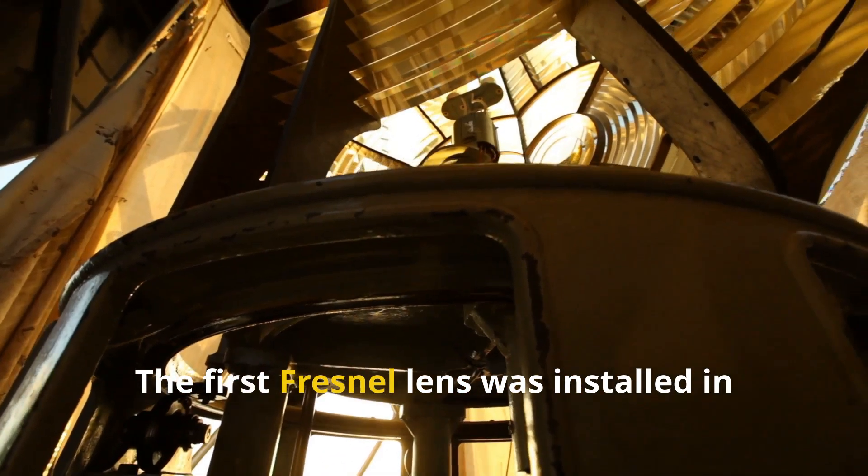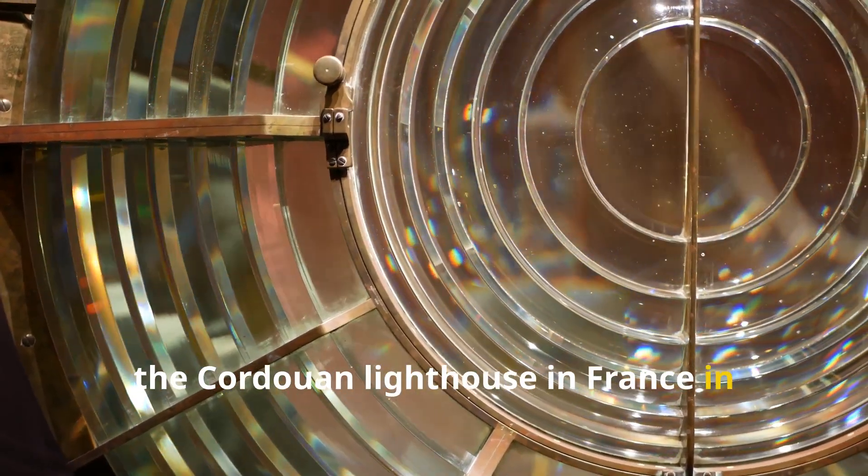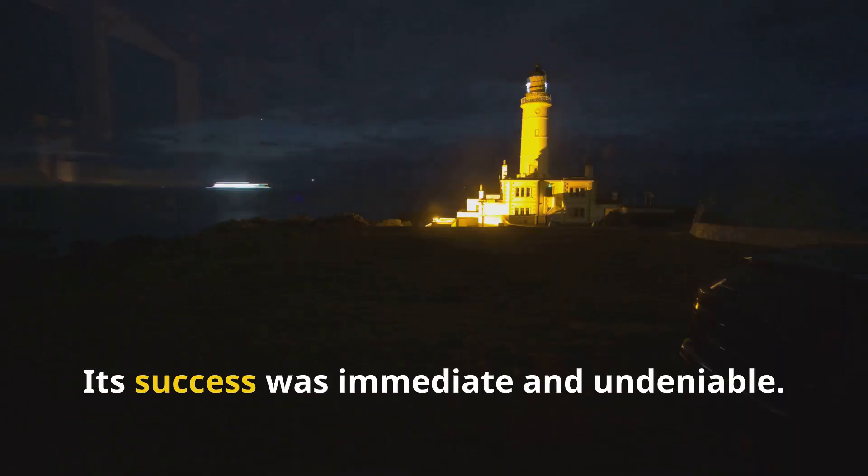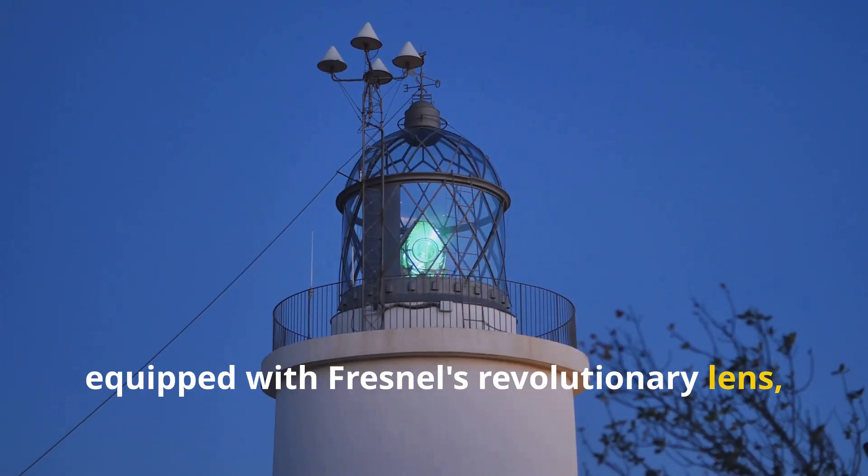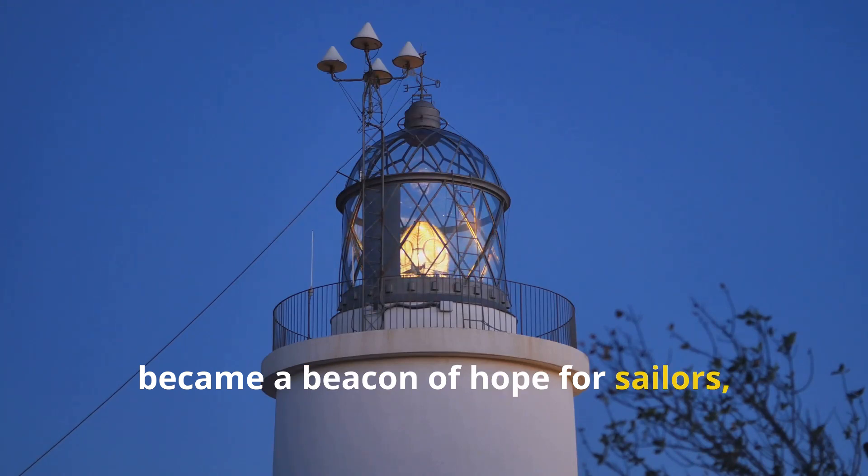The first Fresnel lens was installed in the Cordouin Lighthouse in France in 1823. Its success was immediate and undeniable. The Cordouin Lighthouse, equipped with Fresnel's revolutionary lens, became a beacon of hope for sailors, guiding them safely through treacherous waters.